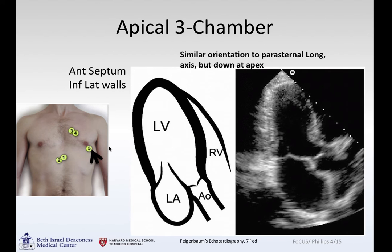Rotating even further — all of this, by the way, is done with the patient in the left lateral decubitus; you are simply rotating the probe — you can bring out the apical three-chamber view: left ventricle, left atrium, aortic valve, and mitral valve. This should ring a bell as similar to the parasternal long axis. It's basically the same thing, just from a different orientation. Instead of being up at spot three, you're down at spot five at the apex, so the apex is what you see first, but it's all the same walls.